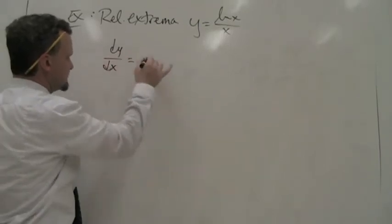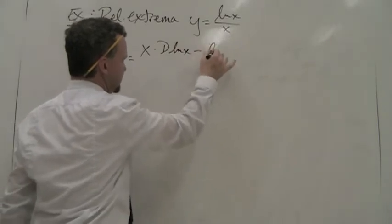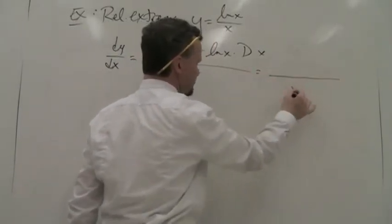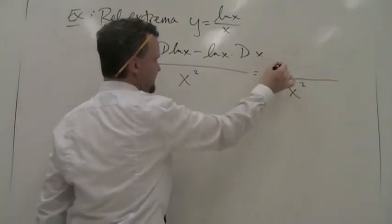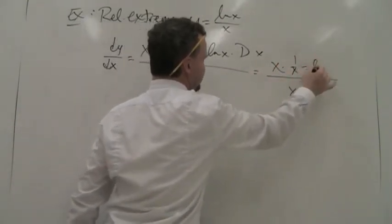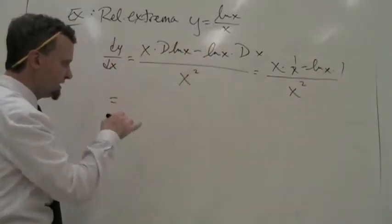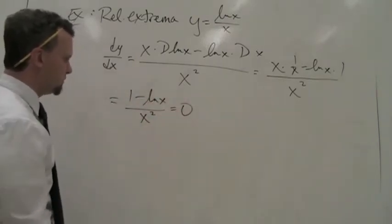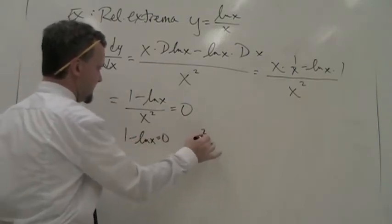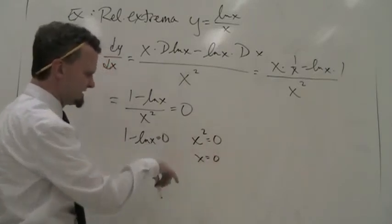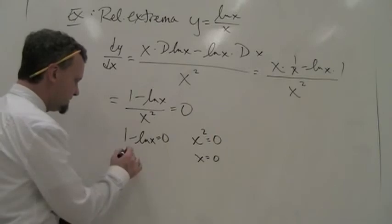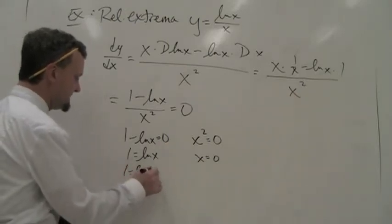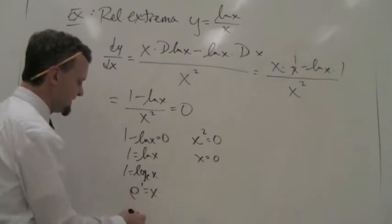Using the quotient rule — ho d(hi) minus hi d(ho) over ho squared — the denominator is x squared. In the numerator: x times (1 over x) minus ln x times 1. That simplifies to 1 minus ln x over x squared. To find critical points, set the top to zero and the bottom to zero. Setting the bottom to zero gives x equals 0. From the top, 1 equals ln x, which means e to the 1 equals x, so x equals e.